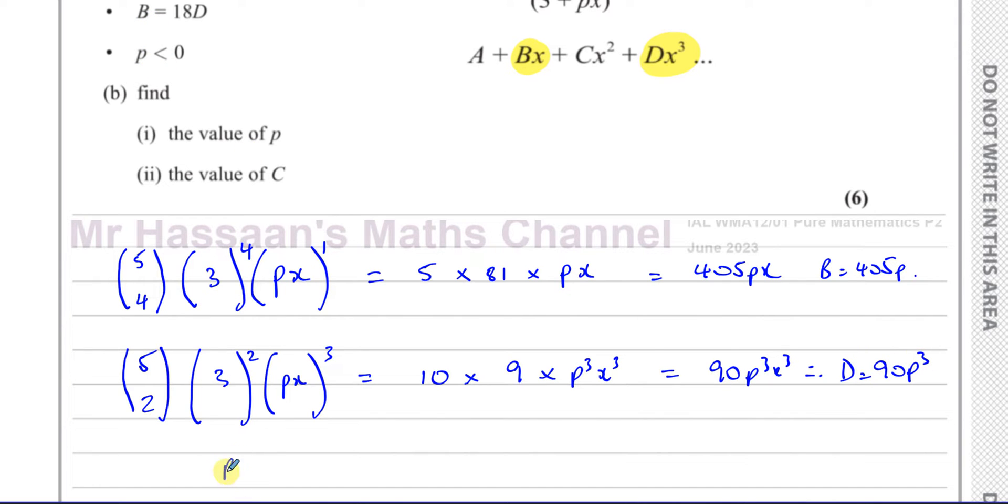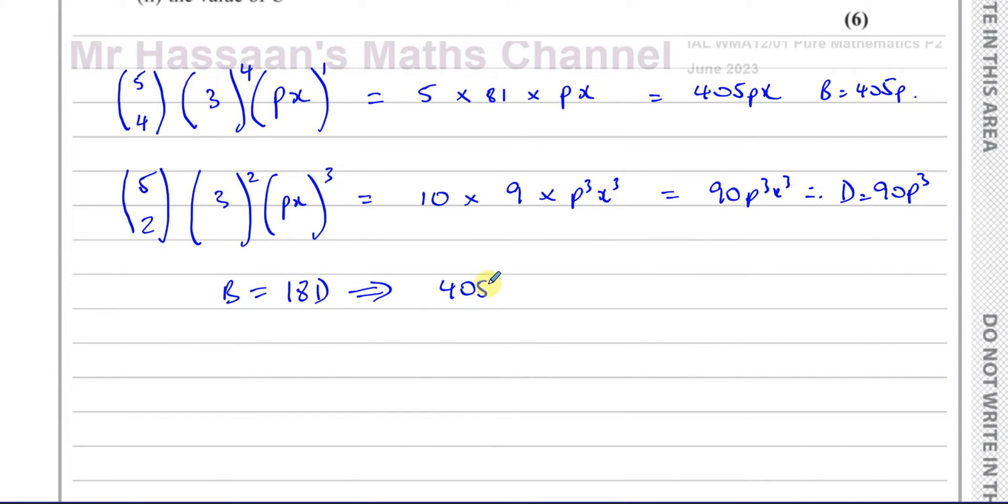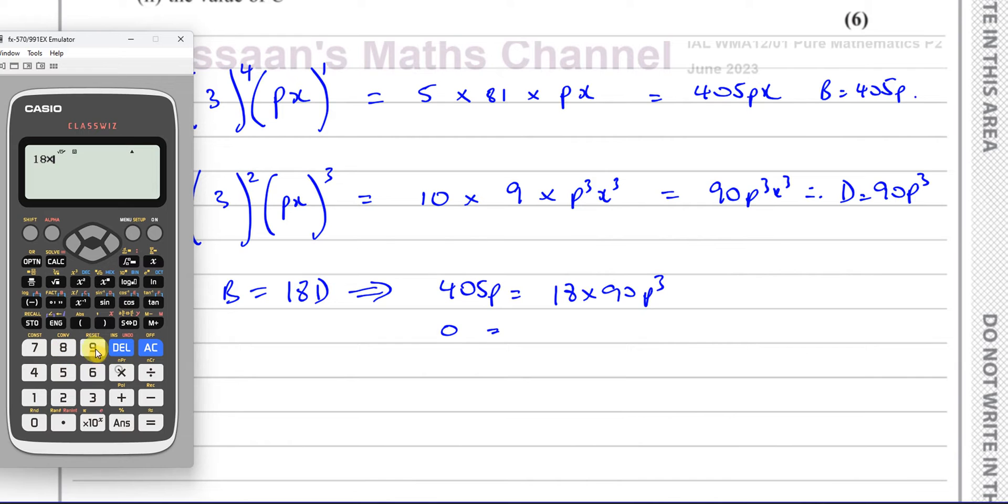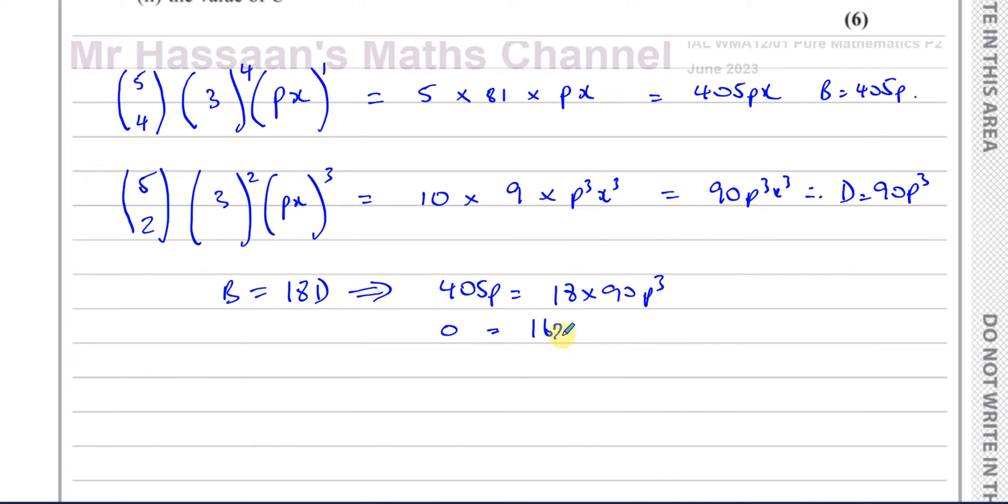Now, what do we know? We know that B is equal to 18 times D. So we can set up an equation in terms of p for that. So we can say 405 times p is equal to 18 times 90p cubed. I'm going to put 0 on this side. This will be 405p minus 1620p cubed equals 0. And then what I'm going to do is I'm going to take out p as a common factor. So I've got p times 1620p squared minus 405 equals 0.